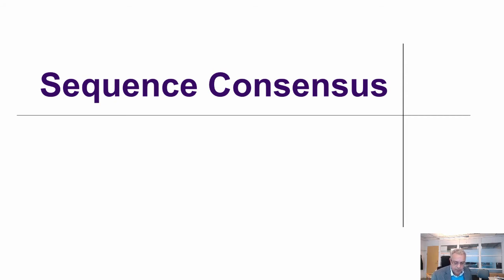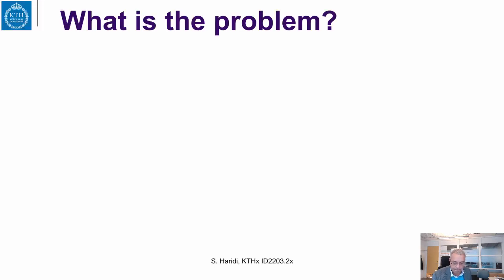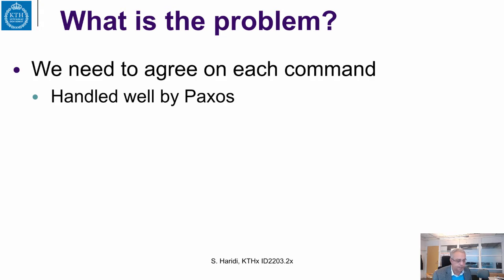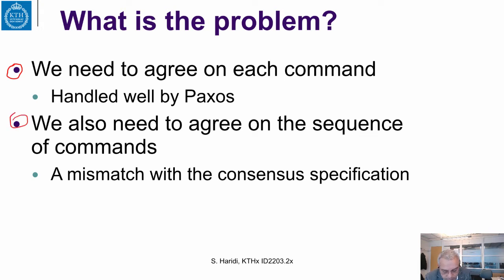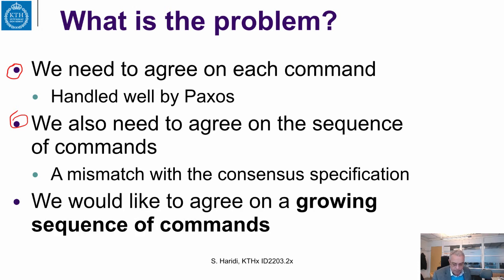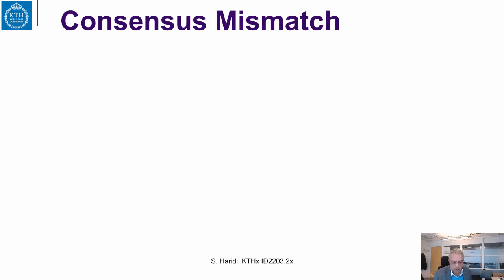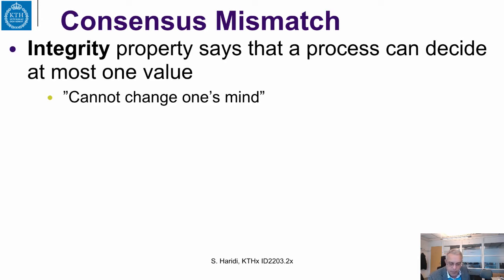Using single value access does not achieve what we really want to do. To know what we want to do, we have to first exactly specify what we want to achieve. We want to define a specification of sequence consensus, which is agreeing on sequences. The problem we have is that we need to agree on each command — this is handled very well by Paxos — but we also want to agree on the sequence of commands, and here we have a mismatch with the consensus specification. What we want is to agree on a growing sequence of commands.